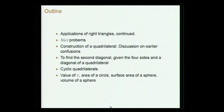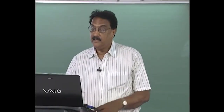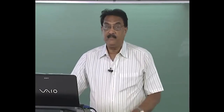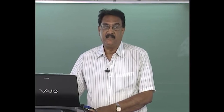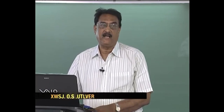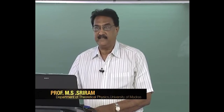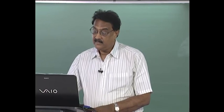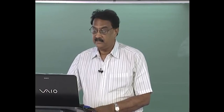Some of the earlier confusions seem to be removed. For instance, the area of a cyclic quadrilateral was given as square root of (s−a)(s−b)(s−c)(s−d). Earlier it was not stated specifically that it is for a cyclic quadrilateral, but Bhaskaracharya tells that it is only for a cyclic quadrilateral and not correct for any arbitrary quadrilateral. Then he will go on with the construction of a quadrilateral — apart from four sides, you have to specify one more thing: one more angle or a diagonal. Given the four sides and one diagonal, how to find the second diagonal, then it continues with cyclic quadrilaterals.